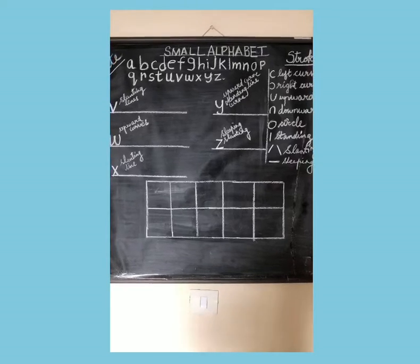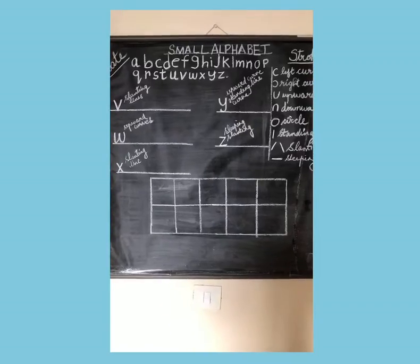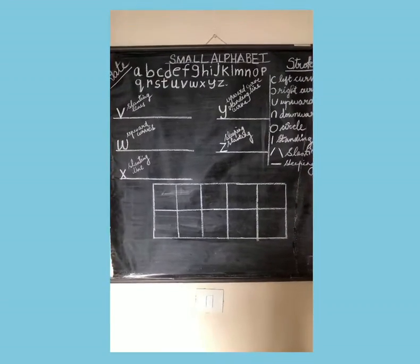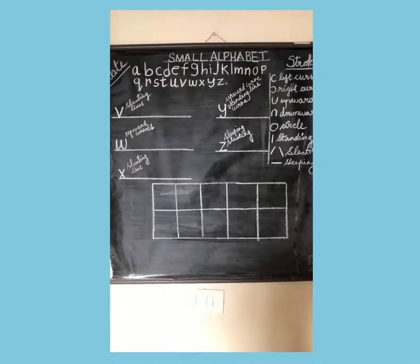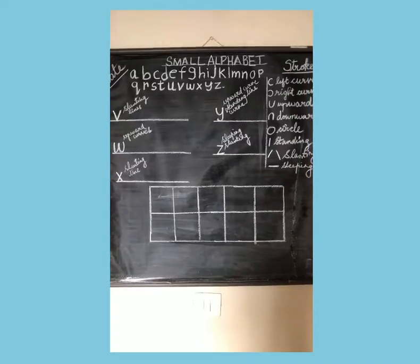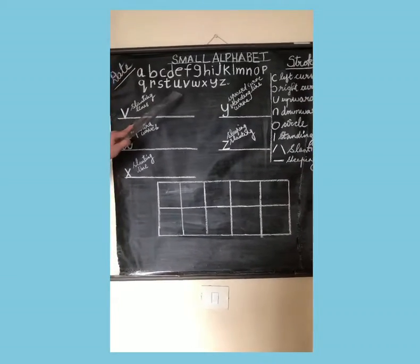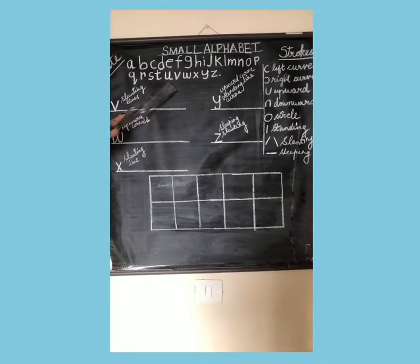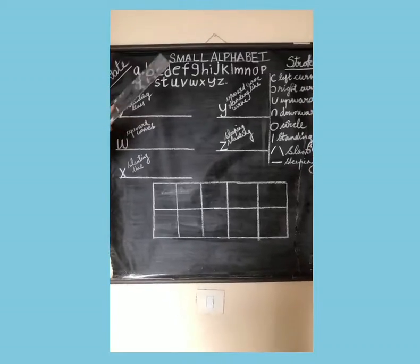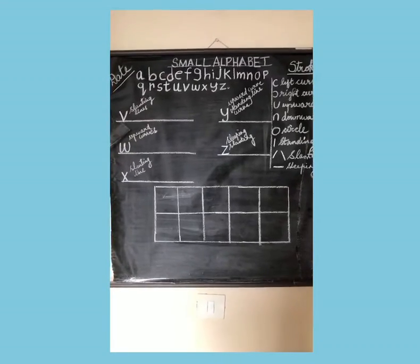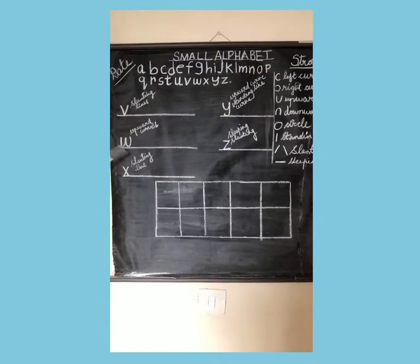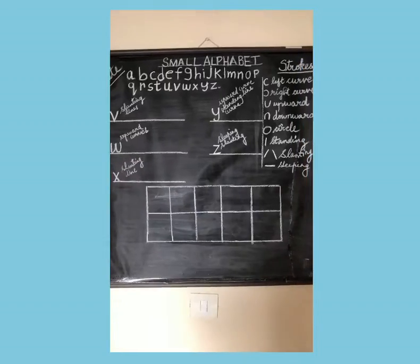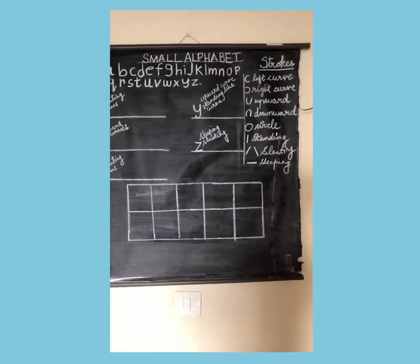Hello dear children, we are back with our small alphabet. We just finished learning small alphabet till alphabet U. Now we are going to learn alphabet V, W, X, Y and Z.